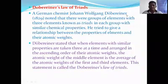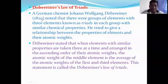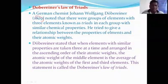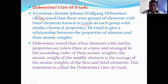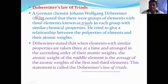Now we will see Döbereiner's Law of Triads. A German scientist, Döbereiner, in the century of 1829, explained the concept of triads. The word triad indicates a set of three elements. These three elements have similar properties. When taking three elements, the central element contains the average atomic mass compared with the top element and the bottom element.